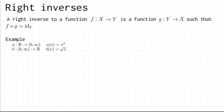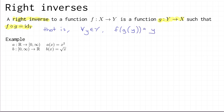Now let's look at the opposite idea: a right inverse. A right inverse to a function f from x to y is again a function g going in the opposite direction from y to x, with the property that f composed with g is the identity on y. This is called a right inverse to f because in the composition f composed with g, g is on the right of f. Equivalently, for all y in Y, we have that f of g of y is equal to y.